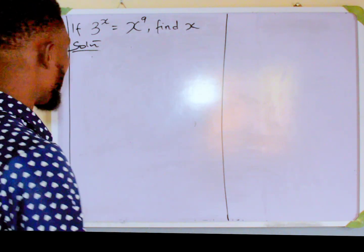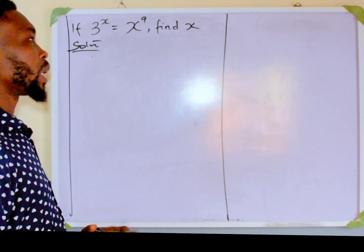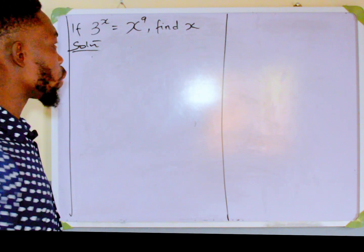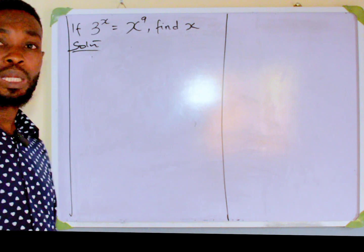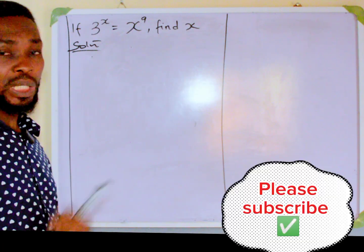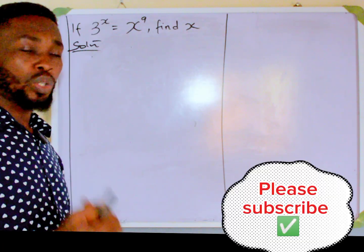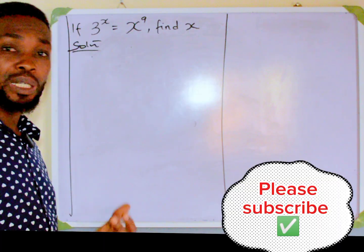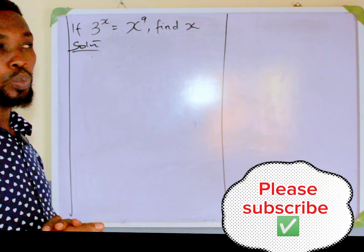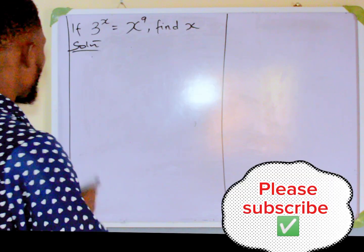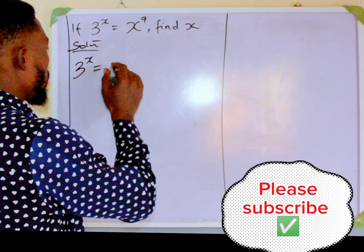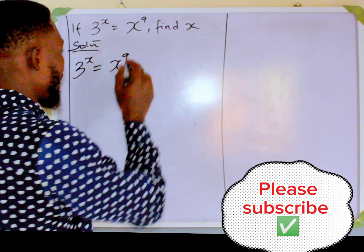Thank you and welcome to my math class. Let's quickly look at this problem: if 3 raised to power x is equal to x raised to power 9, find x. Before we continue, please subscribe to my channel, like, comment, and share to help us grow. So let's go back — we have 3 raised to power x is equal to x raised to power 9.